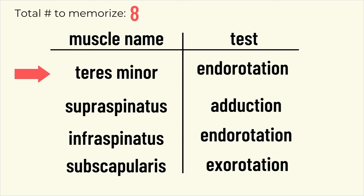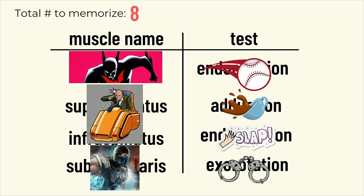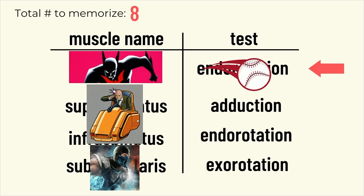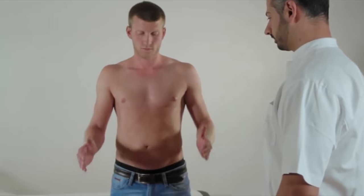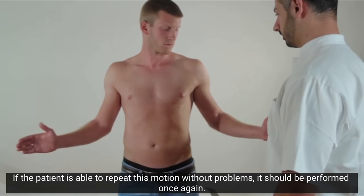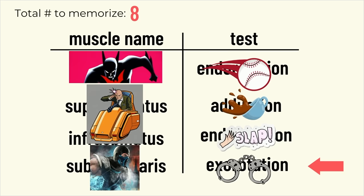Now we can start to memorize by turning things into images. Teres minor to me is Terry McGinnis — Batman Beyond. A side note: we all have unique ways to visualize things based on our unique interests; I use a lot of images from comics and anime, but you can use what's most memorable to you. The test for teres minor is abduction and internal rotation, which looks like throwing a baseball — so the image is a baseball. The test for supraspinatus looks like emptying a cup, so the image is spilled coffee. The test for infraspinatus looks like a backhand slap, so it's a slap. And the test for subscapularis looks like arresting someone — so it's handcuffs.